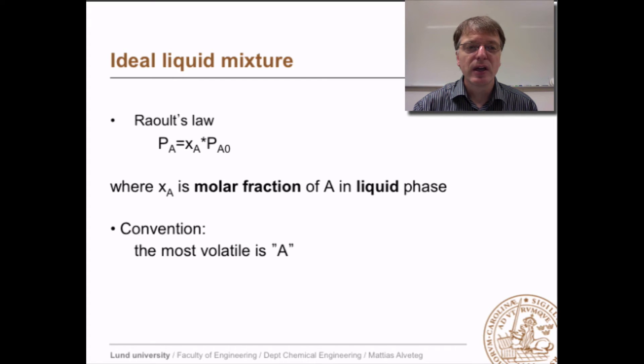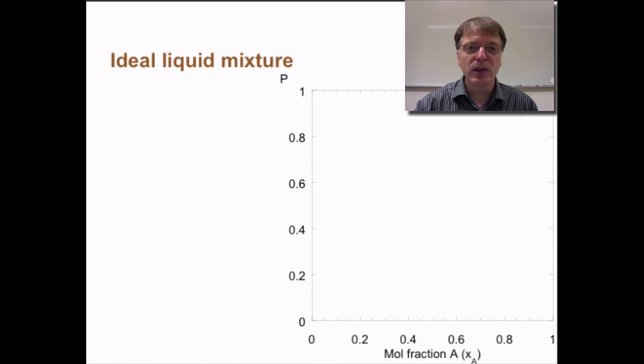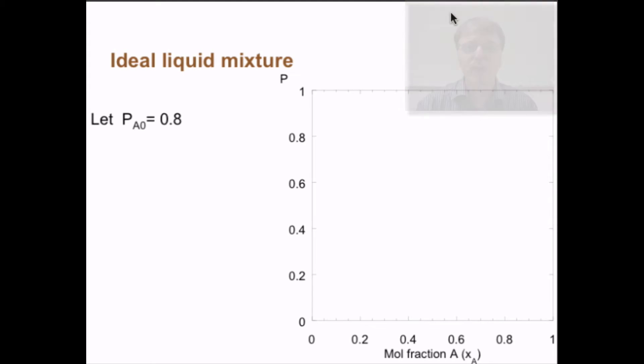The convention here is to have the most volatile as A and the less volatile as B. Since we have a binary mixture, x_B equals 1 minus x_A. Let's assume that we have the vapor pressure over pure A as 0.8 and the vapor pressure over pure B as 0.3.